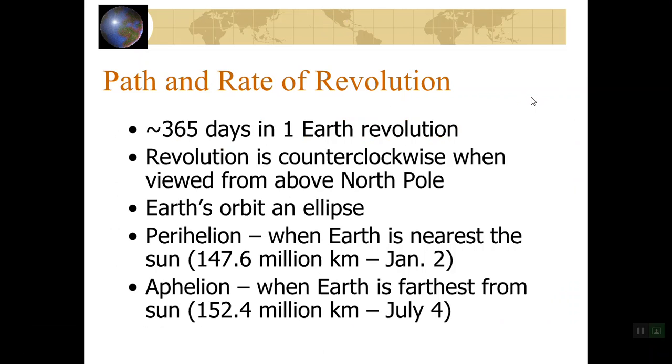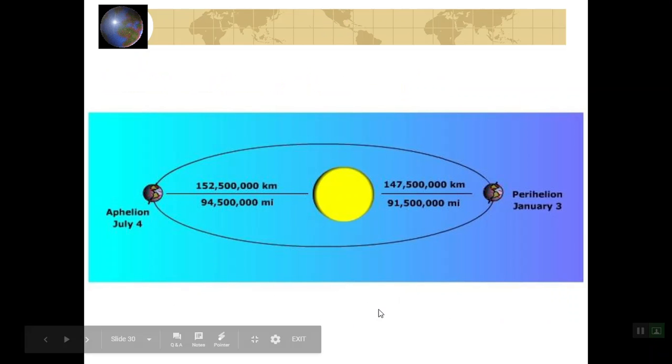Alright, it takes Earth 365 days to make one Earth revolution. Revolution is counterclockwise when viewed from the North Pole. Earth's orbit is an ellipse or elliptical or oval shape. It is not circular. So when we look at this diagram here, you can see that Earth's revolution is not circular around the sun. And at some times of the year, Earth is a little bit farther from the sun, like in this case, 152 million kilometers, versus other times of the year, it's only 147 million kilometers away from the sun. So when it's far from the sun, it's called aphelion. So far away, aphelion, and then near, perihelion.